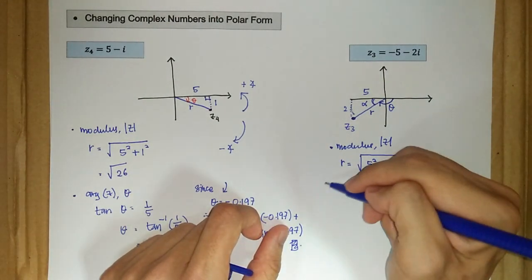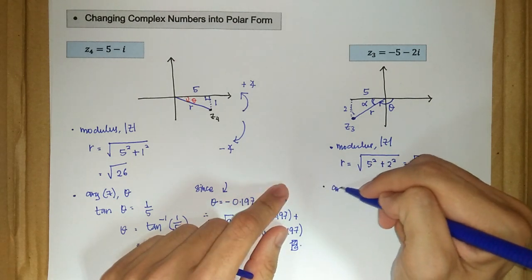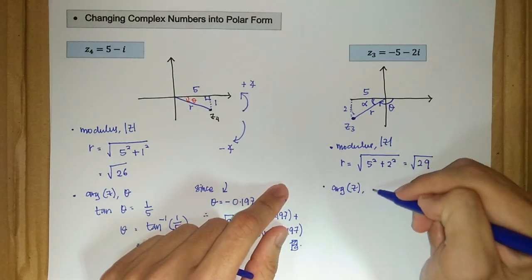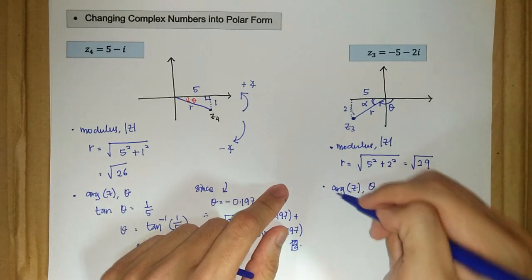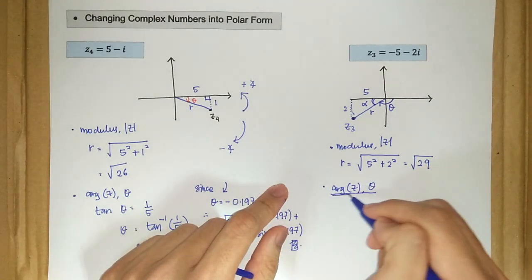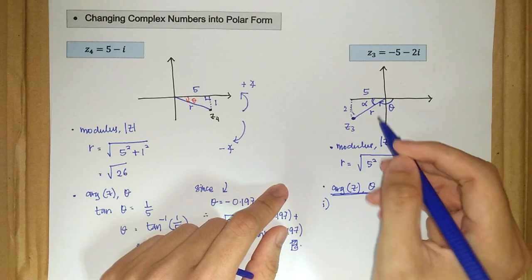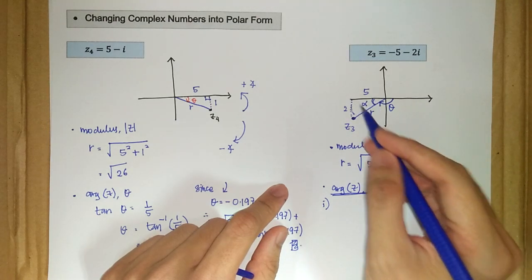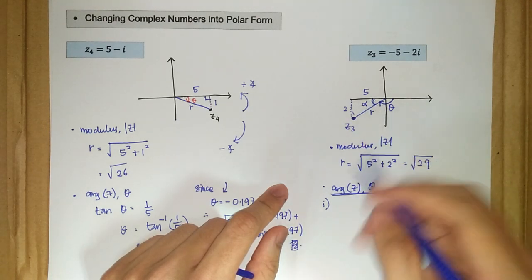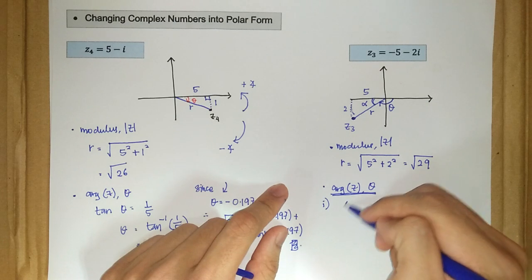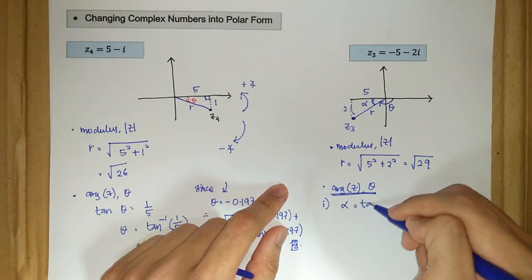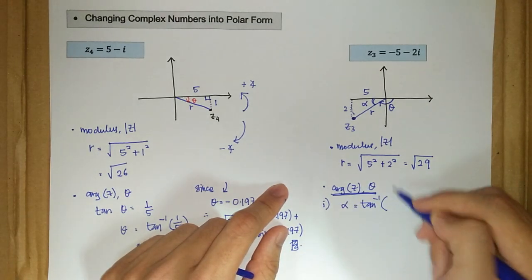So the argument, so our argument z or denoted by theta, we have two steps here. The first one is we want to find the value of alpha. So we have alpha is just the arctan of the opposite divided by the adjacent.